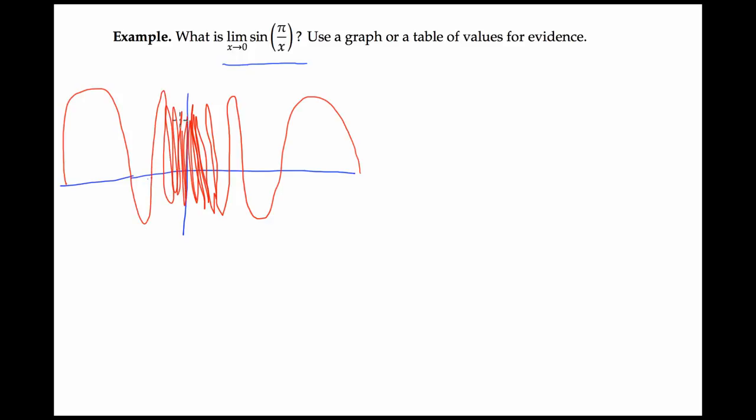If you graph this on your graphing calculator and zoom in near x equals 0, you're going to see something that looks roughly like this. It just keeps oscillating up and down and up and down as x goes towards 0, because as x goes towards 0, pi over x is getting bigger and bigger. And you're going to go through these oscillations between 1 and negative 1, sort of faster and faster. From the other side, when x is negative, you'll see a similar kind of behavior, just oscillating faster and faster as x goes to 0.